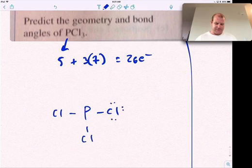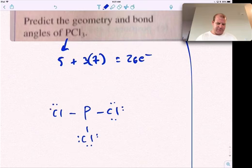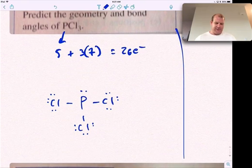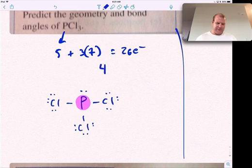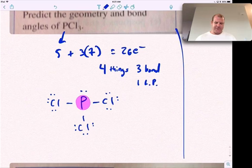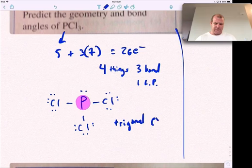8, 10, 12, 14, 16, 18, 20, 22, 24, 26. And so if you look at our phosphorus, phosphorus has four things, four things, three bonds, one lone pair of electrons. So this means trigonal pyramidal, so it means trigonal pyramidal geometry, and bond angles.